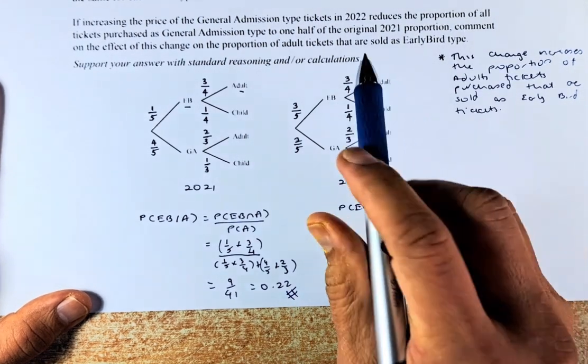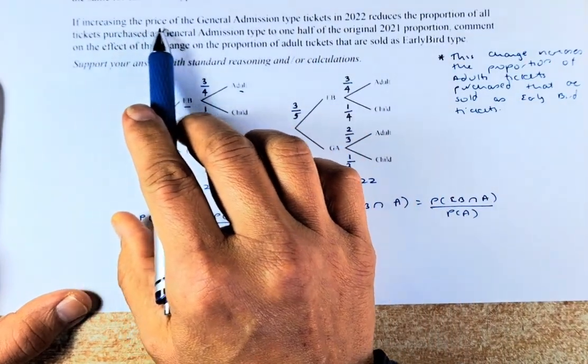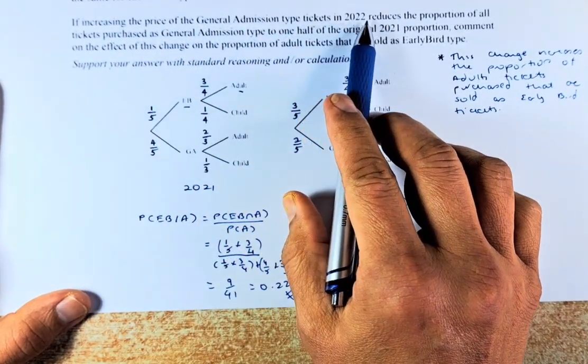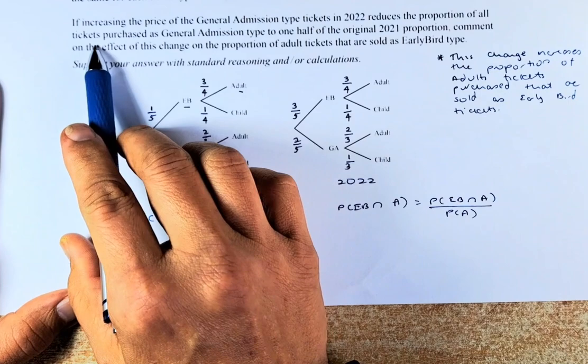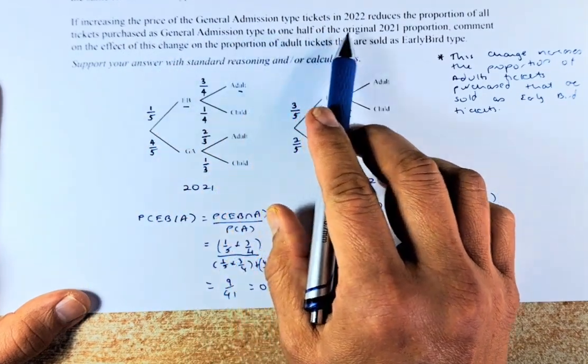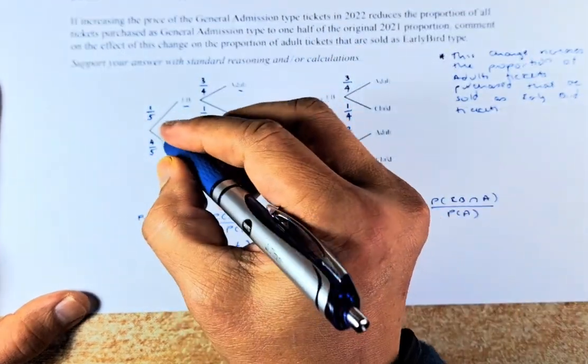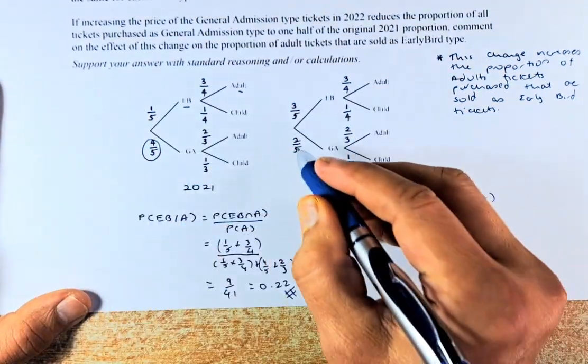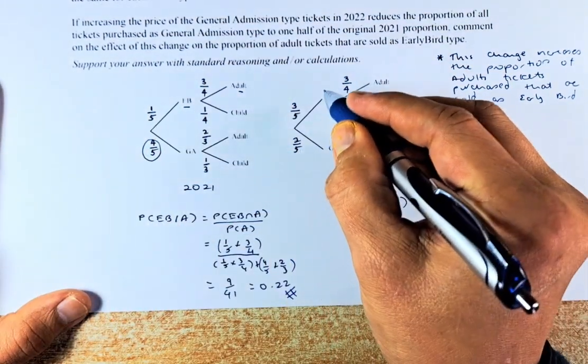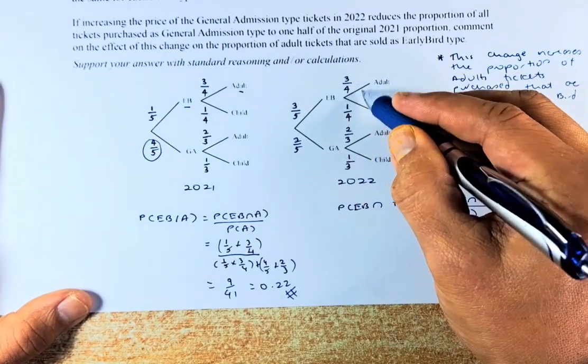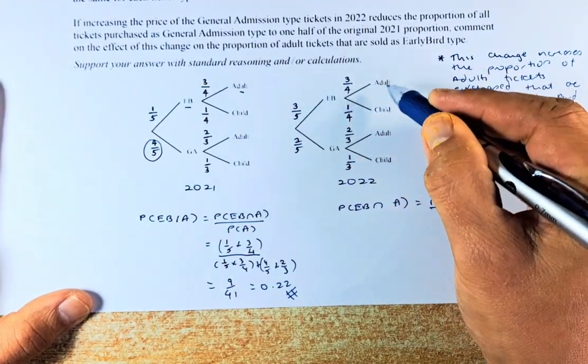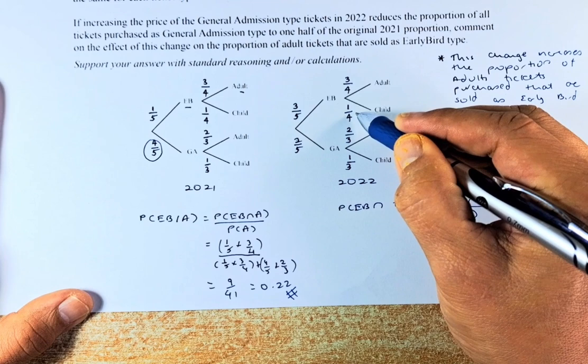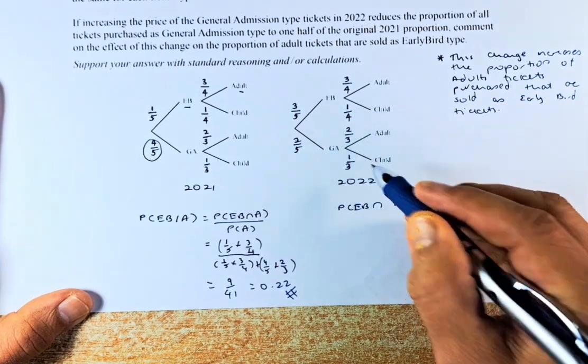So now the question tells you that if increasing the price of general admission tickets in 2022 reduces the proportion of all tickets purchased as general admission type to one-half of the original, so general admission is four-fifths, now half of that is going to be two-fifths. If that is two-fifths, the early bird is three-fifths. The other proportions are going to be the same. So adult is three-quarters, child is one-quarter, adult is two-thirds and child is one-third.